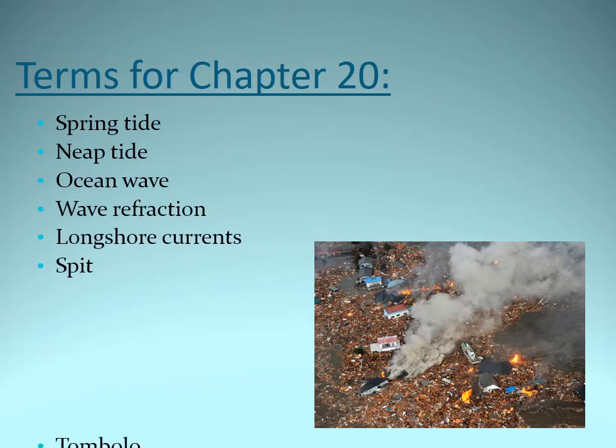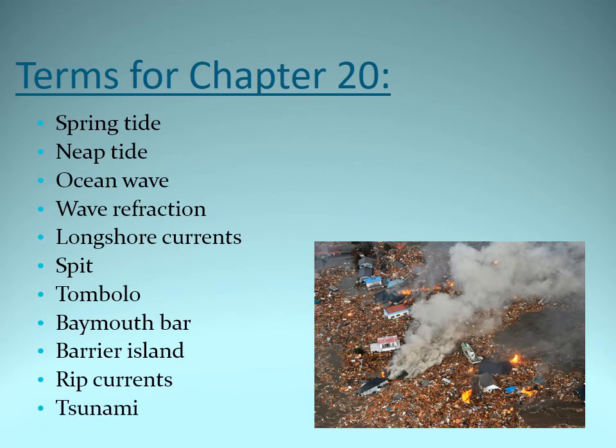Common terms for chapter 20 — we're going to get into different kinds of tides, what causes waves, what wave refraction is, and some coastal features such as a spit, tombolo, bay mouth bar, and a barrier island. Even though this isn't in the book, we're going to talk about rip currents and then end it with tsunamis.